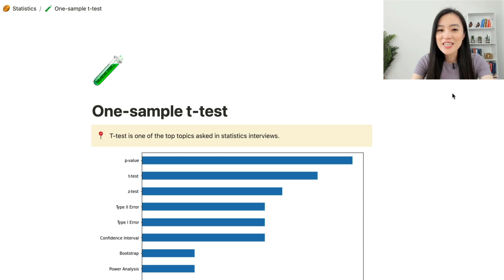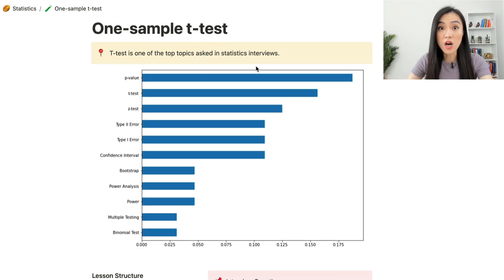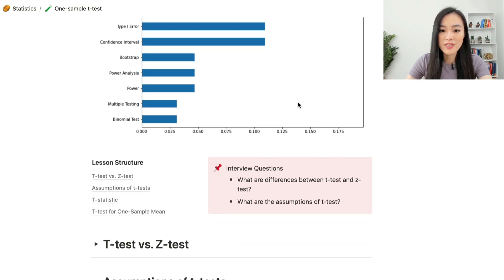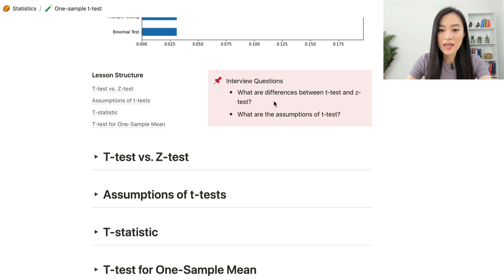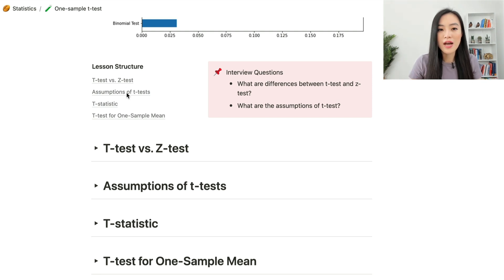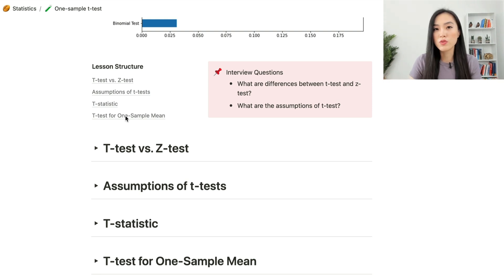In this lesson, let's focus on the t-test, specifically the one-sample t-test. The t-test is one of the top topics asked in statistics interviews, so it's really important to have a very good understanding before your interviews. We'll look at the difference between the t-test and the z-test, assumptions of the t-test, the t-statistic, and using the t-test for one-sample mean.